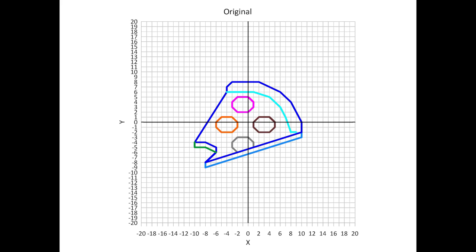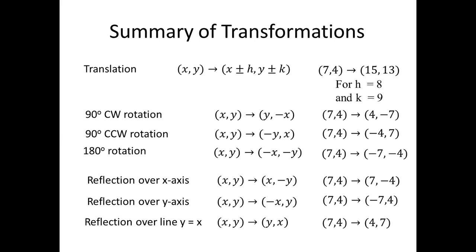We started with an object and decided to do some translations and rotations in the previous videos, and this is what the original figure looked like. We summarized all of the transformations using coordinate rules. The first one is translation, where the figure moves in different vector directions within the coordinate plane, given by an additional constant added to both x and y. In rotation transformations, various combinations occur where the ordered pair becomes negative or the two ordered pairs are swapped. The same applies to reflections, and we looked at all the coordinate rules for those in the previous presentations.